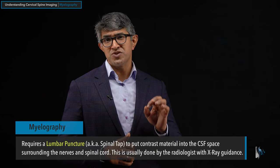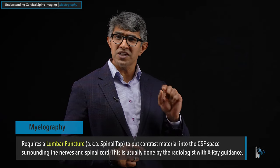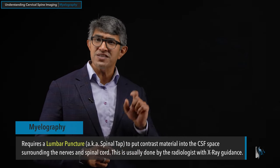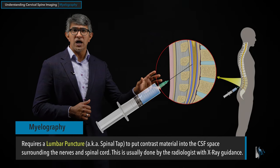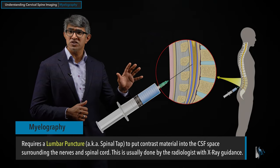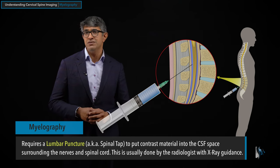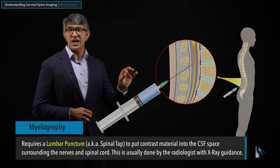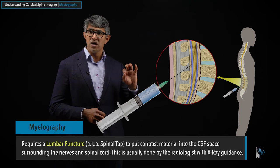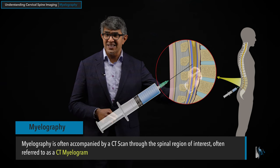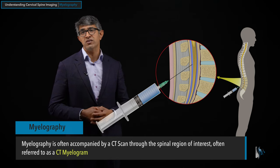Myelography is a procedure that is done typically with a CAT scan. It does require the placement of contrast material into the CSF itself. As this animation shows, people will have a spinal tap or a lumbar puncture performed — usually done by the radiologist and it usually takes about 15 minutes. It's done with x-ray guidance, and they put a needle through the skin between the spinous processes and into the spinal canal, into what's called the thecal sac, which is where the spinal fluid itself is.